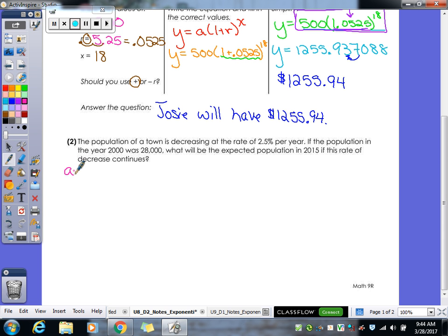So let's make our little chart of the numbers we need to know. So what is our A? How many people do we start with? 28,000. Perfect. Our R would be 0.025. Again, we've got to move that two places to the left. And then our X? It would be 15. So we're going from 2000 to 2015. So our X would be 15.